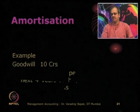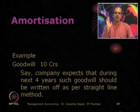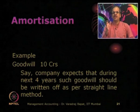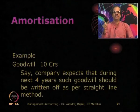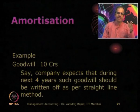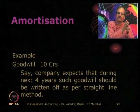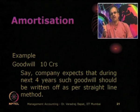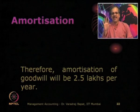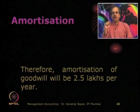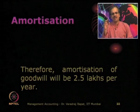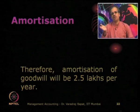For example, suppose goodwill is 10 crores and the company expects to write it off over the next 4 years using the straight line method. The amortization charge each year is simply 10 crores divided by 4, which equals 2.5 crores per year. I trust you have understood the concept of goodwill and its amortization.